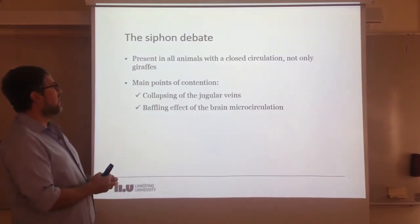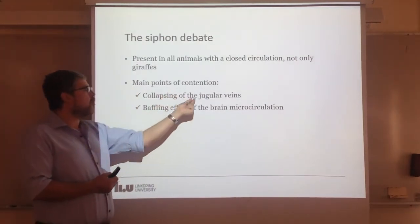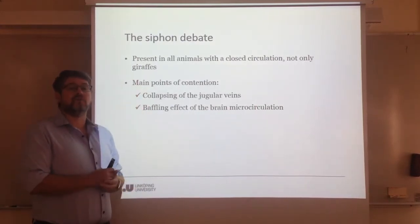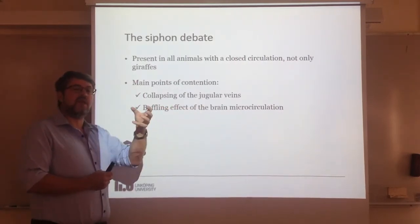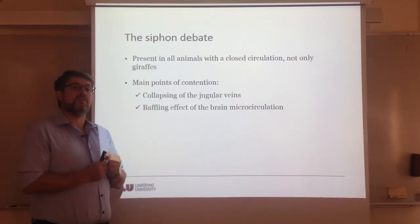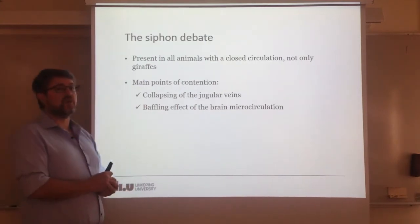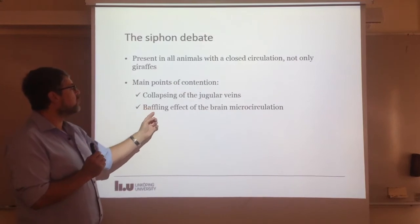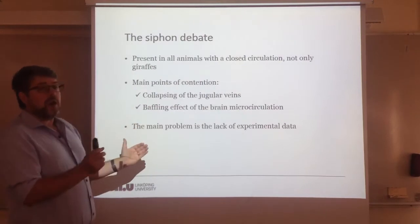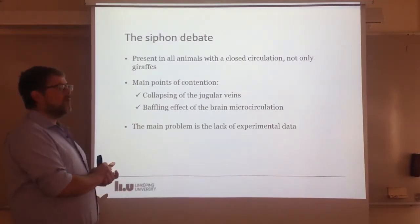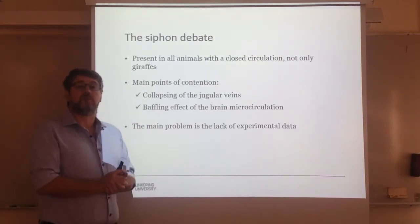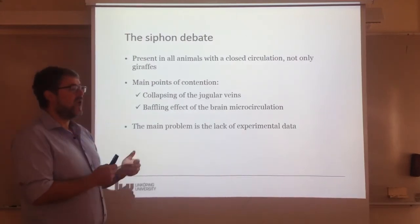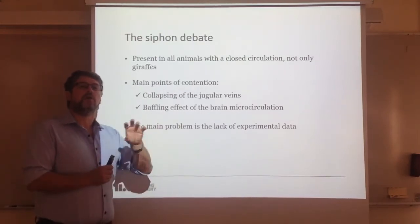The siphon would be present in humans as well. The main points of contention have to do with the role of the jugular vein — the vein that returns blood from the head to the heart, which would be the down part of the siphon. If the jugular vein collapses, blood flow cannot continue. The second point of contention is that up in the brain, blood is distributed through very small capillary networks, which could have a baffling effect. The main problem for this debate has been the lack of experimental data. Researchers have built models based on tubes and hoses, but proper experiments on animals have not been fully done.